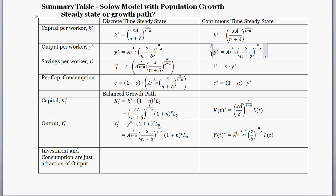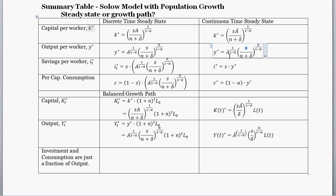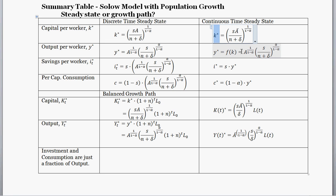Over here we have the steady state level for output per worker. It's a legitimate steady state level because all of these things inside are constant. Similarly to per-worker capital, per-worker output is going to be positively related to technology and savings — if savings or technology increases, the steady state level of per-worker output increases. But if population growth or depreciation increase, that decreases the steady state level of per-worker output. Per-worker output is just f of lowercase k, so we simply plug in the steady state level of per-worker capital into the production function.